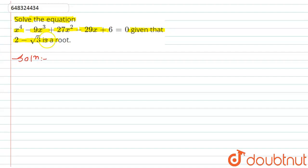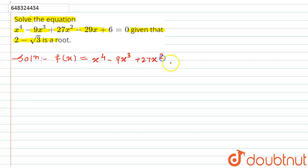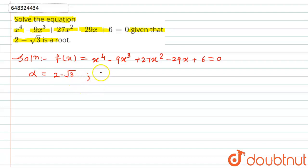We have to find the other roots of this equation. Let f(x) = x⁴ - 9x³ + 27x² - 29x + 6 = 0. One root alpha = 2 - √3. We know this type of root always comes in conjugate pairs, so the second root beta = 2 + √3. The third root is gamma and the fourth root is delta, which we have to find.